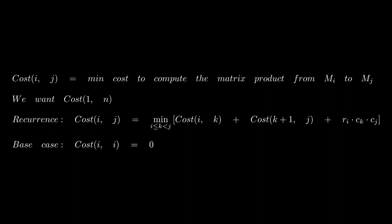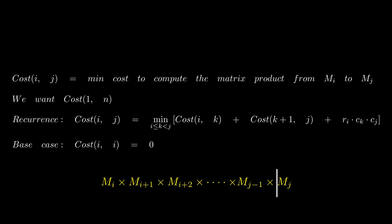We define cost(i,j) as the minimum number of multiplications to compute the matrix product from Mi to Mj. Our answer is cost(1, n). The recurrence is: cost(i,j) = min over all k from i to j (exclusive) of [ cost(i,k) + cost(k+1,j) + r1·ck·cn ]. The base case is cost(i,i) = 0 — a single matrix has zero multiplication cost.